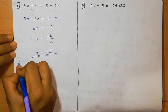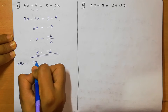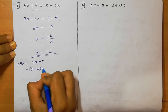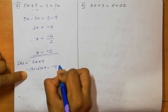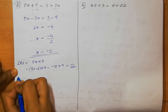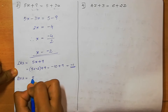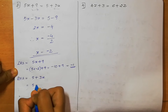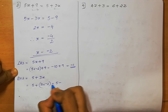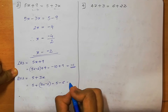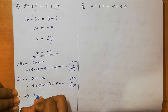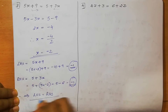We verify: LHS = 5x + 9 = 5 × (minus 2) + 9 = minus 10 + 9 = minus 1. RHS = 5 + 3x = 5 + 3 × (minus 2) = 5 minus 6 = minus 1. LHS equals RHS, so hence verified.